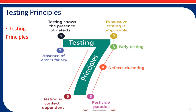The first principle is testing shows the presence of defects. Testing can show that defects are present but cannot prove that there are no defects. Testing reduces the probability of undiscovered defects remaining in the software, but even if no defects are found, testing is not a proof of correctness. Testing shows the presence of defects, not their absence.